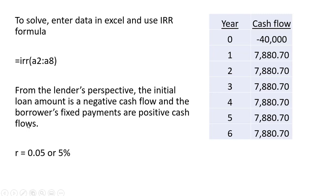So in Excel, the way this is working here is that from the lender's perspective, you have a negative cash flow at the beginning — you give somebody $40,000, you loan that amount to somebody to buy a car or a boat. And then you'll get these fixed payments for the next six years, and that would be a positive cash flow. Entering that formula, you'll find that the interest rate, or the yield to maturity, is going to be 5%. That's it.